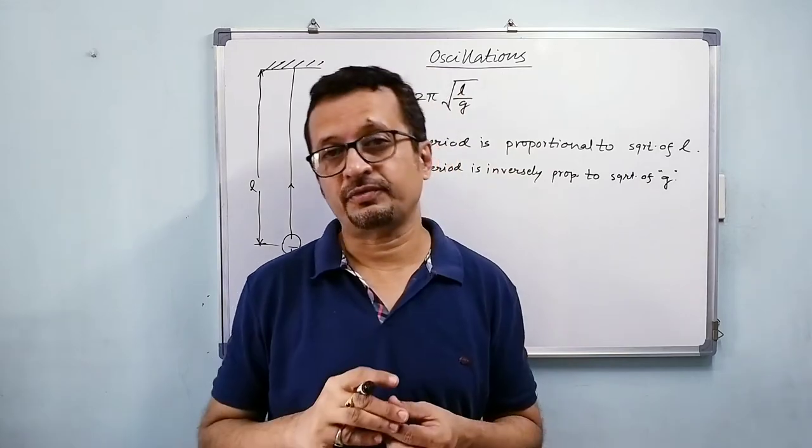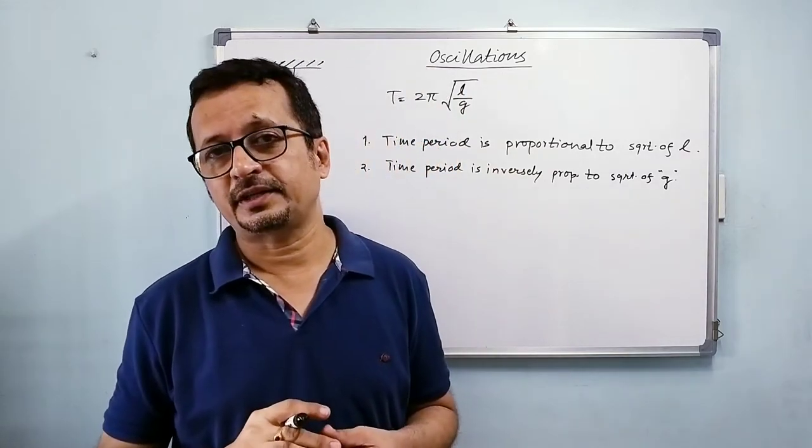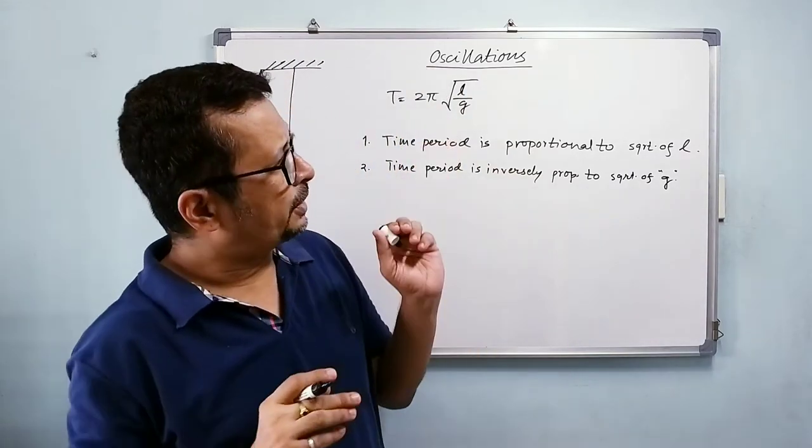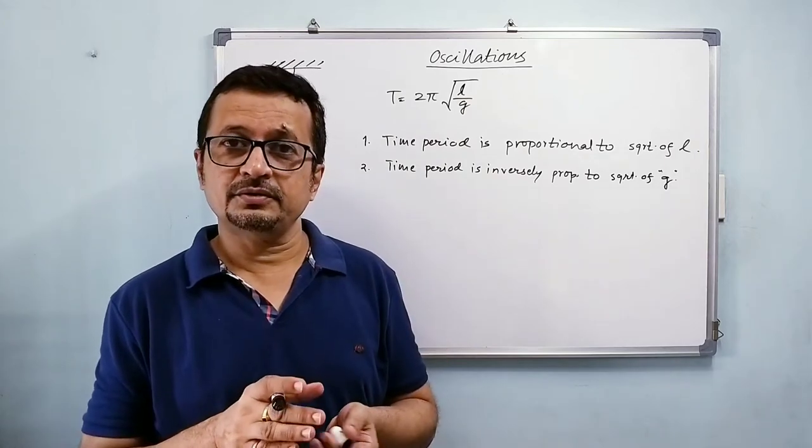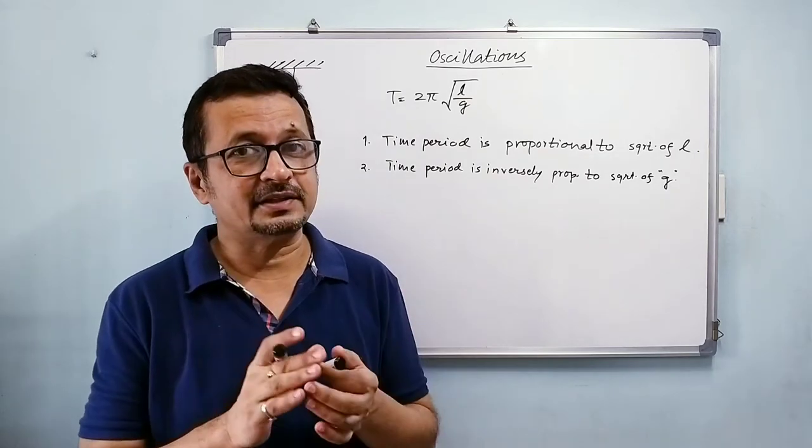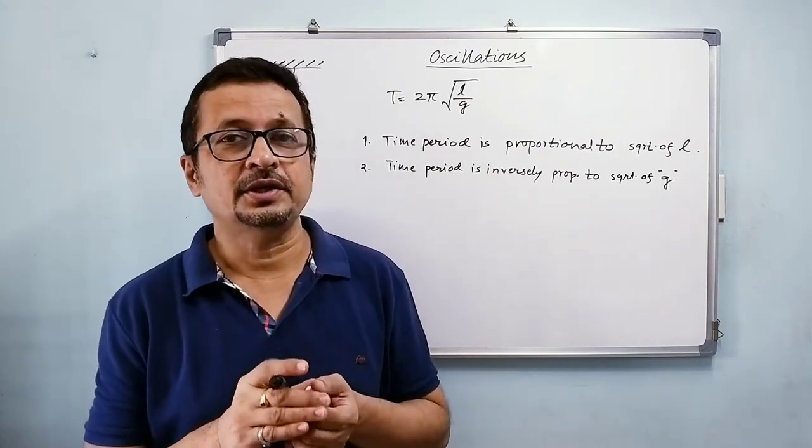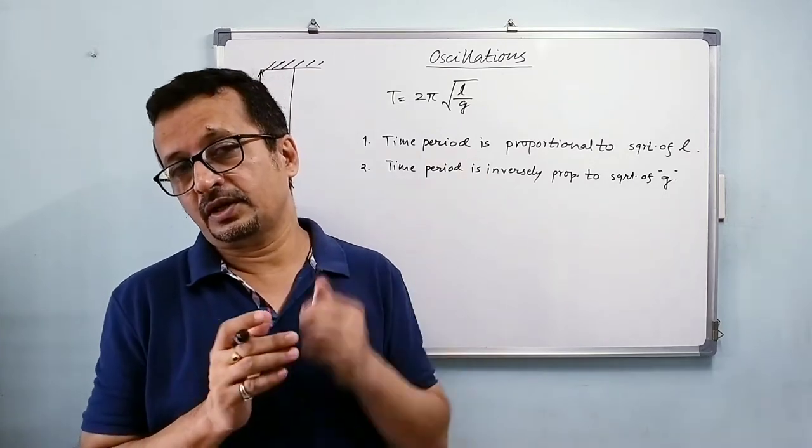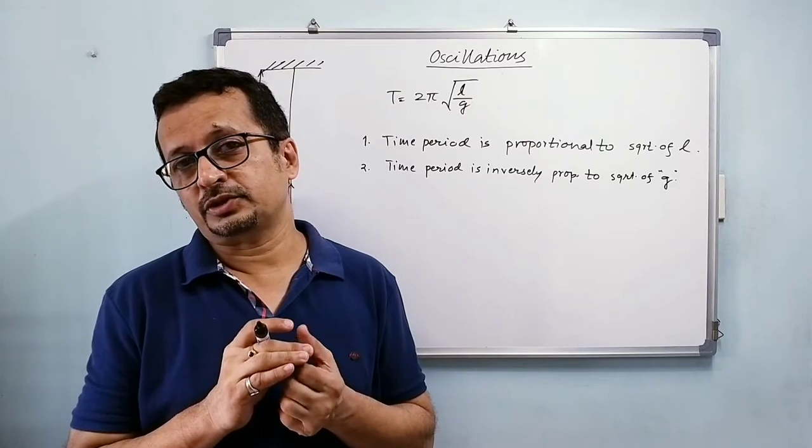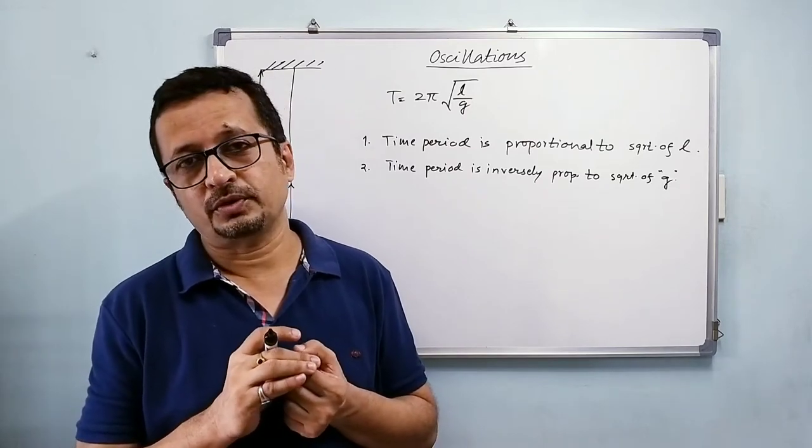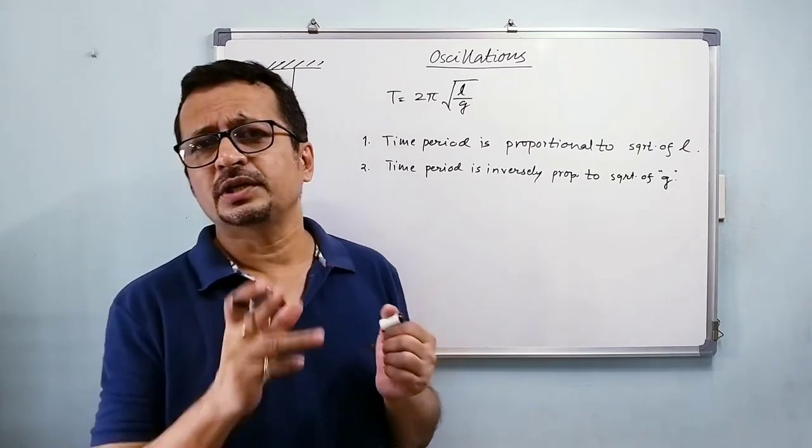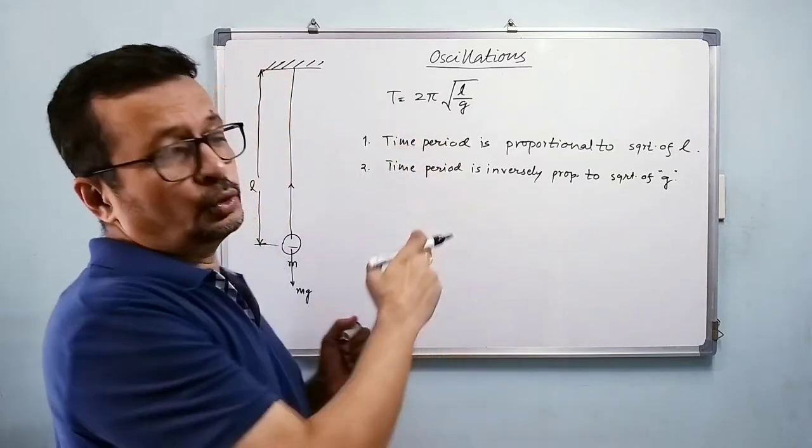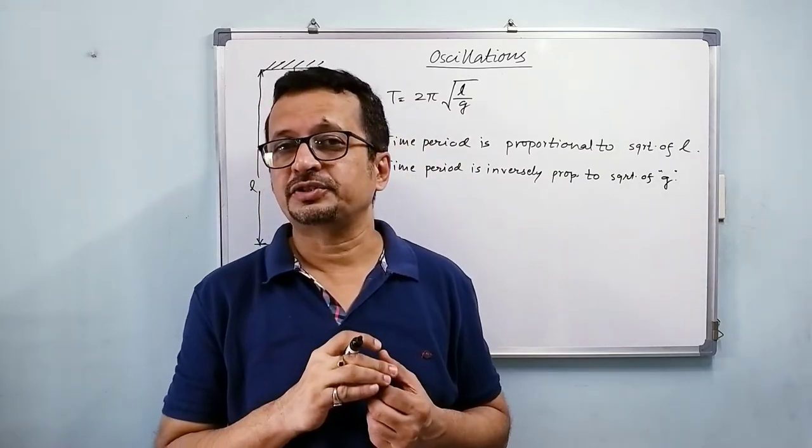That is the acceleration of free fall or acceleration due to gravity at that place. That means if you are at the equator, you will have a certain time period for the same length. If you take the same pendulum to the North Pole or South Pole, you will get different time period.